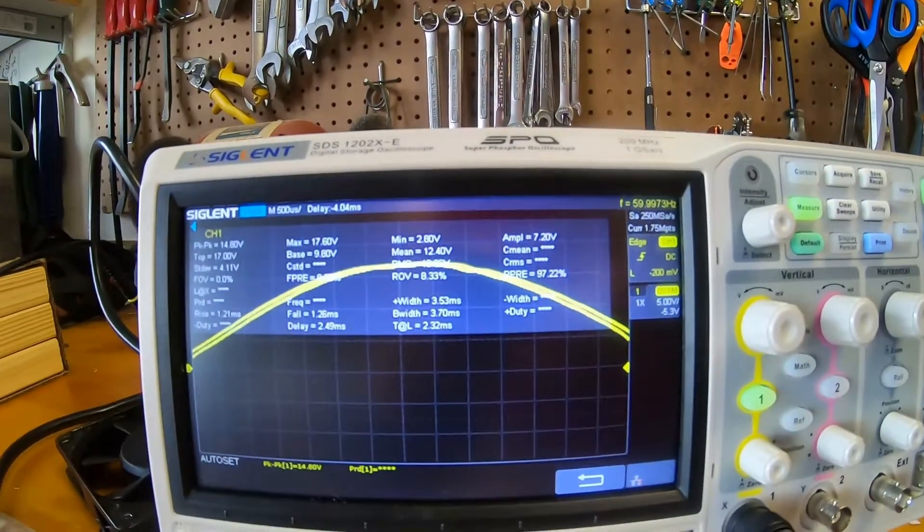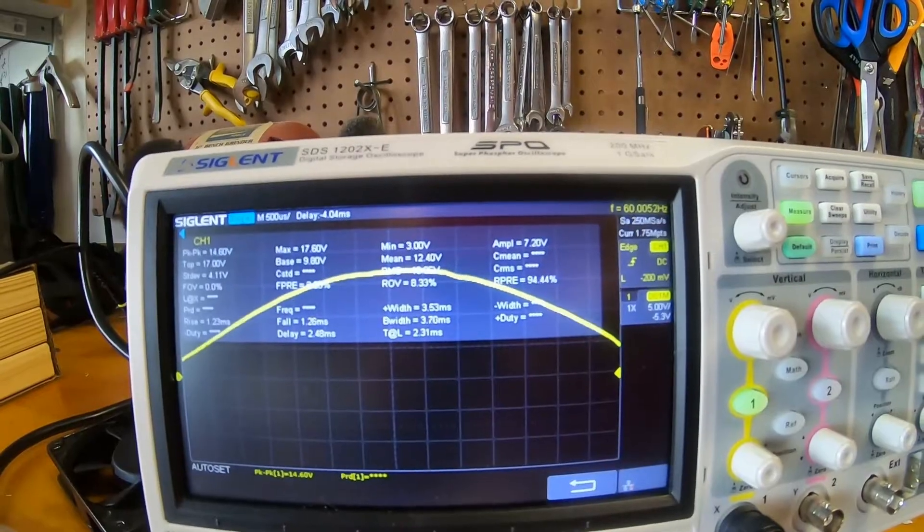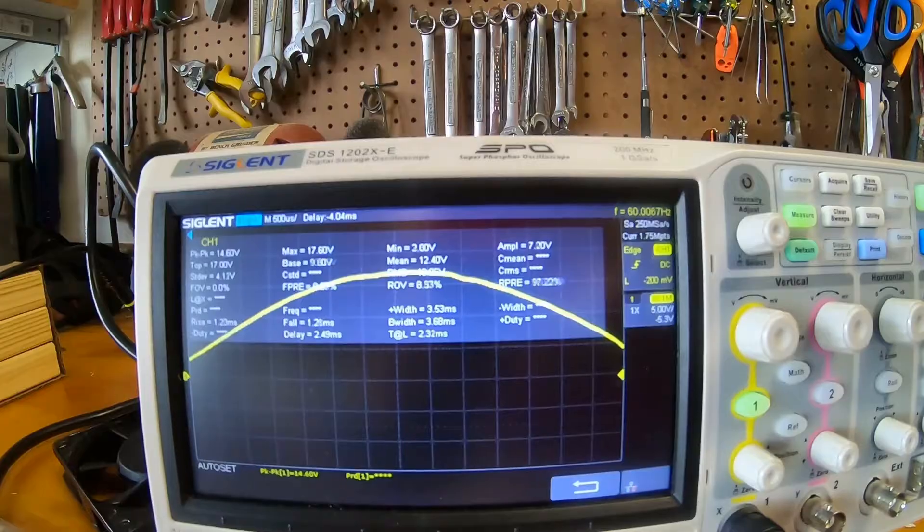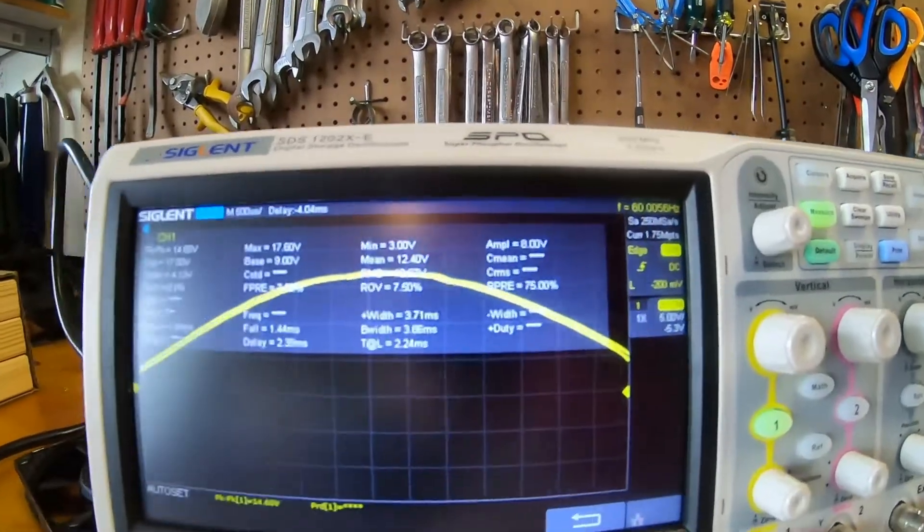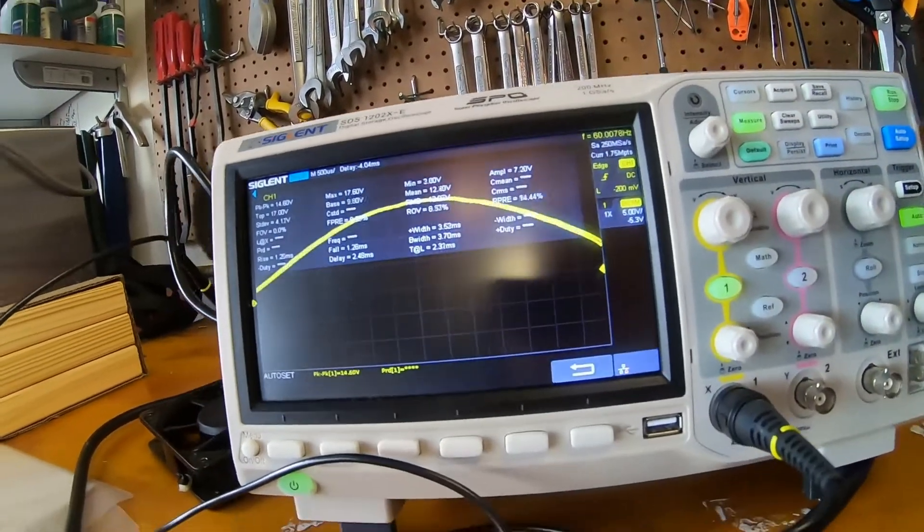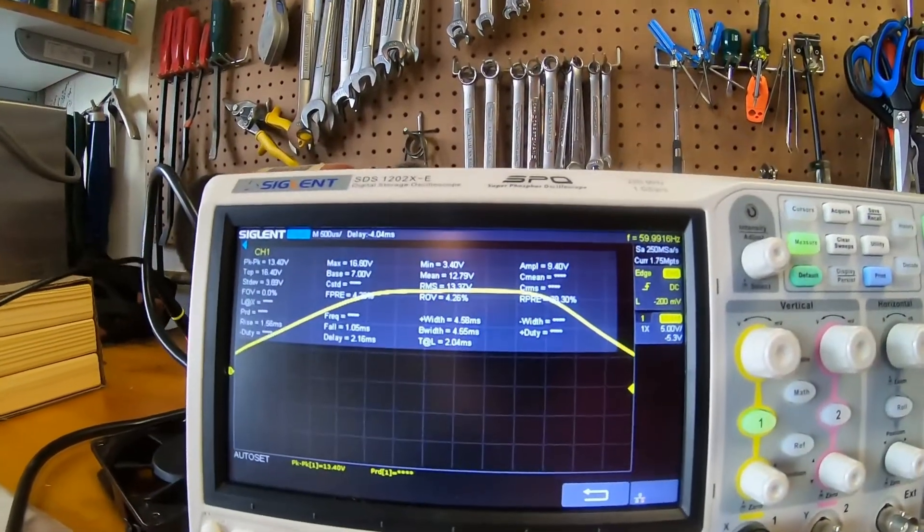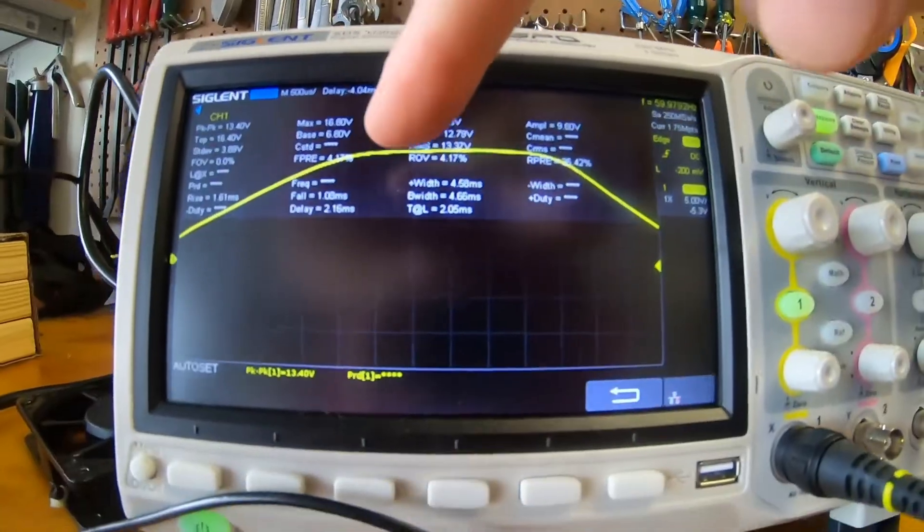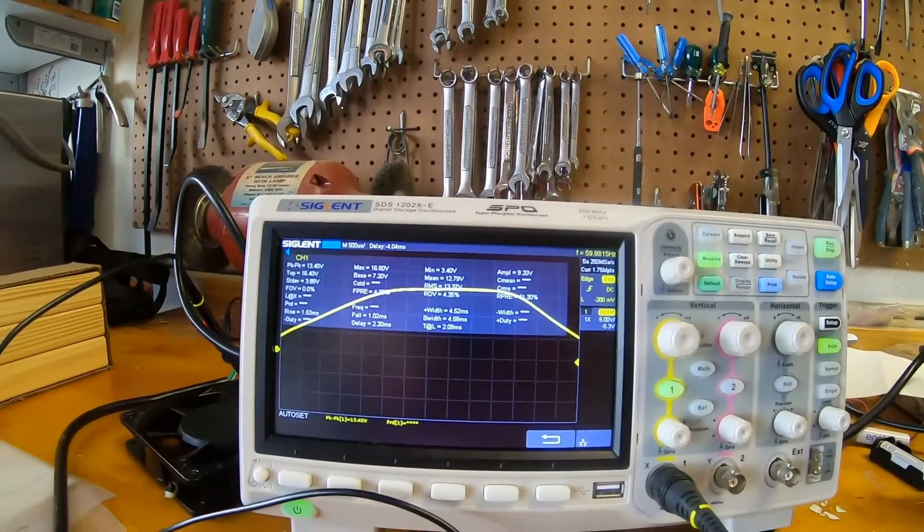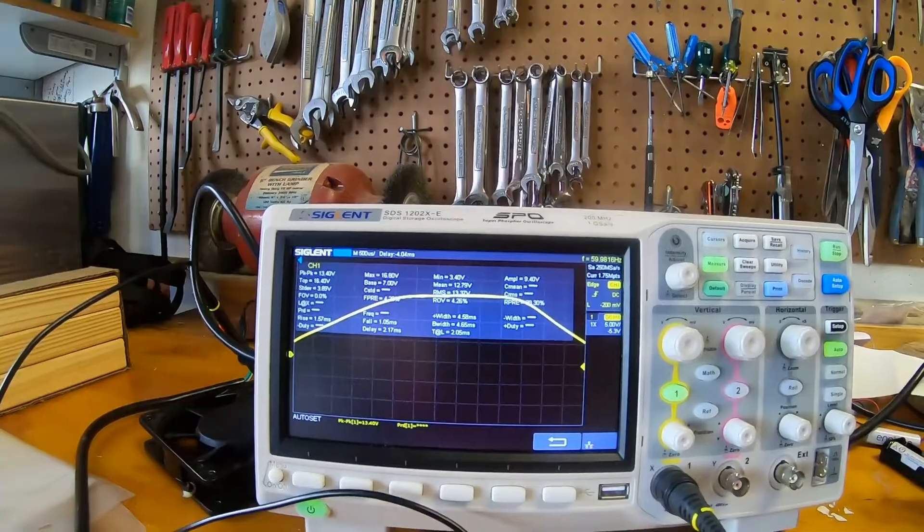Let's take a look at that when we were on battery power. To be honest with you, it actually looks a little bit better on battery power. It's pretty darn impressive. Again, that's battery. Utility. Notice the utility is a little bit flatter at the peak. Whereas on battery, it's a bit more round.